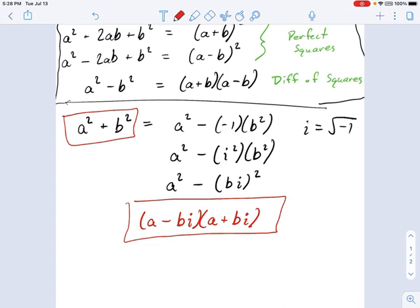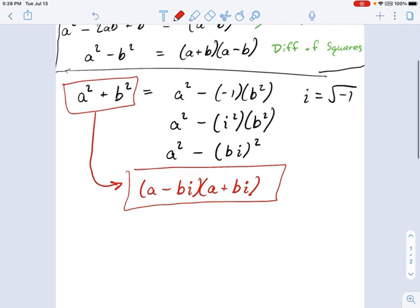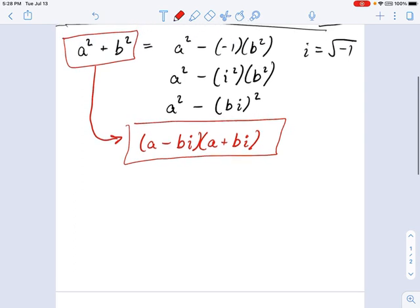And it's that you can rewrite any two squares that are added together as a set of complex factors, a minus bi and a plus bi. And actually, this gets into another point.